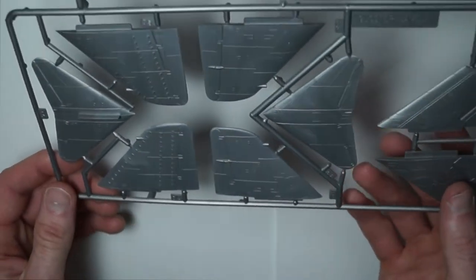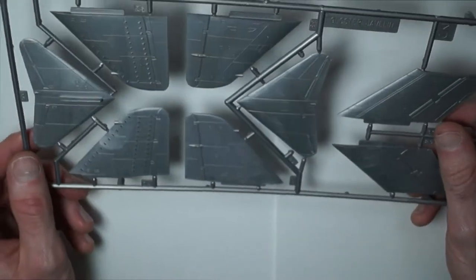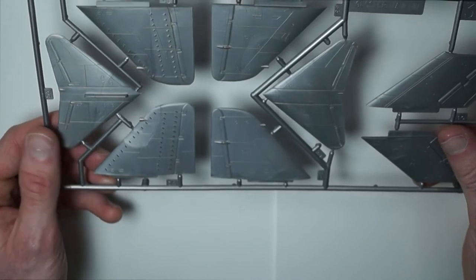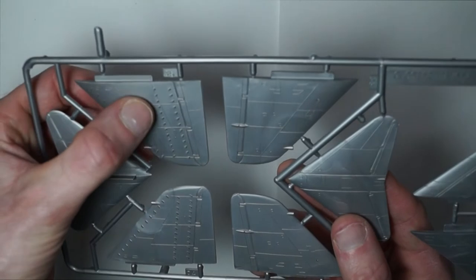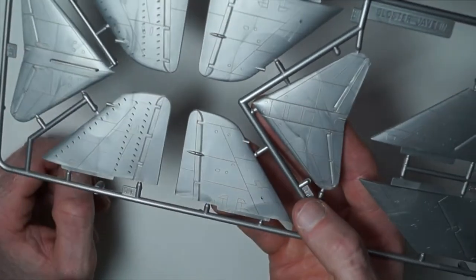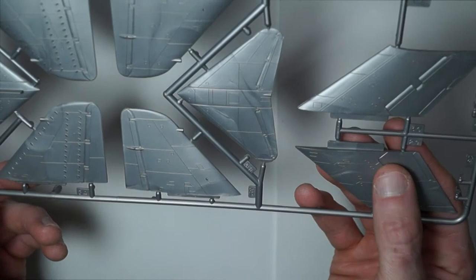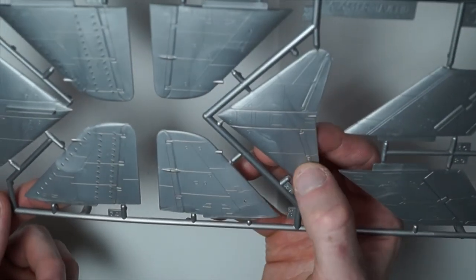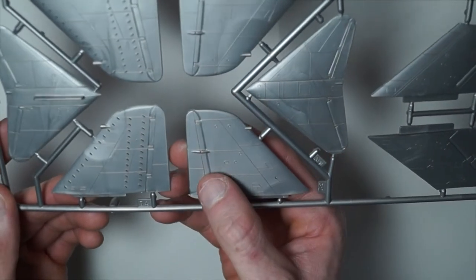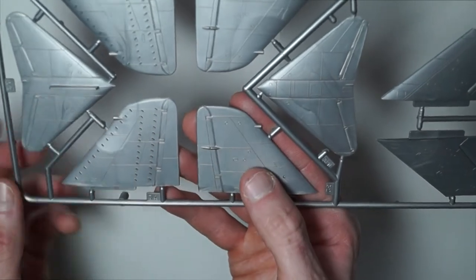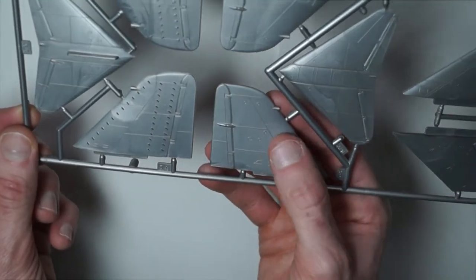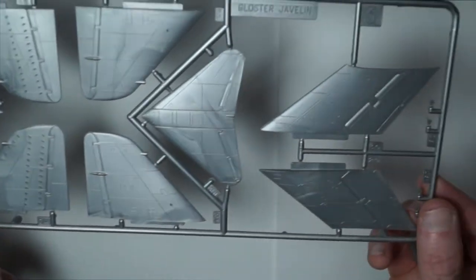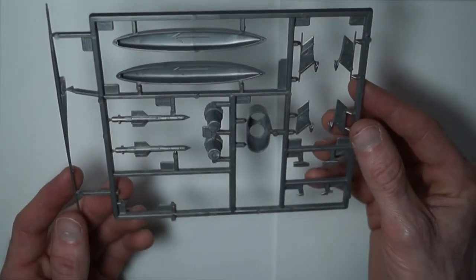And sprue three is the tail fin and the control surfaces. Again, the panel lines are raised with the control surfaces have the recessed lines and the last sprue.